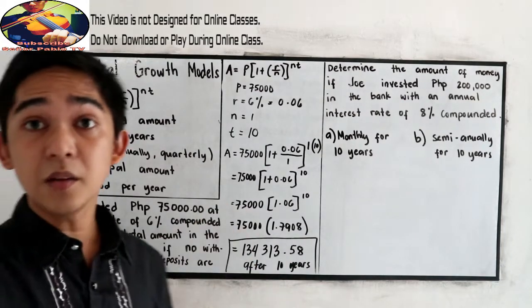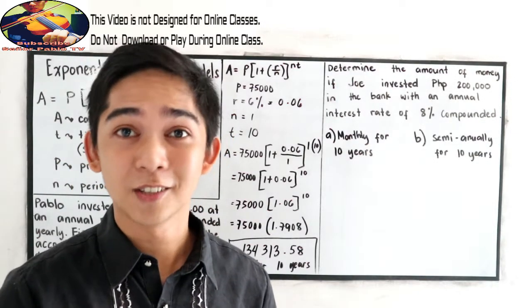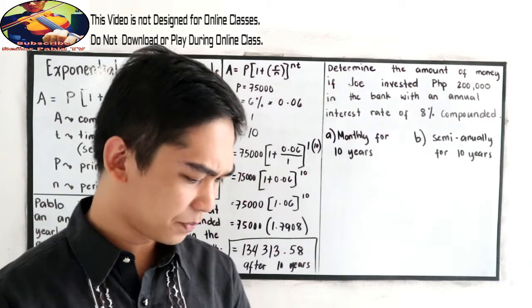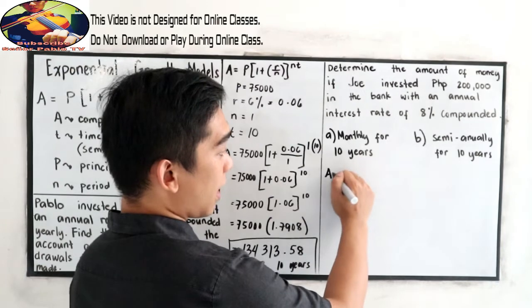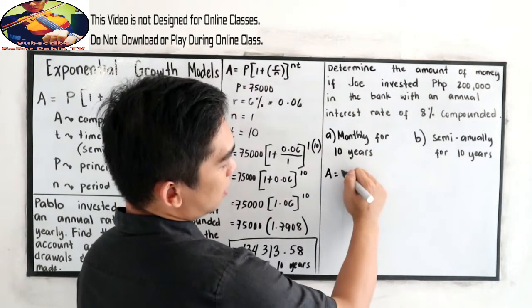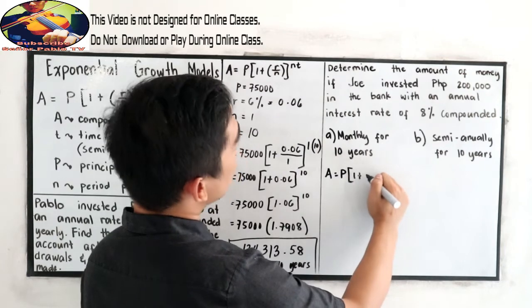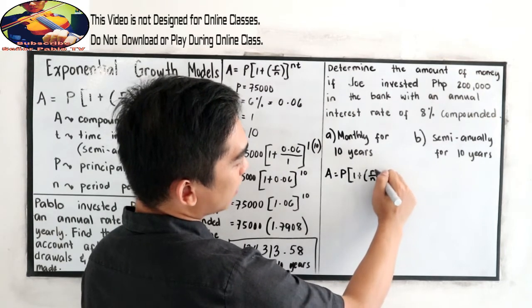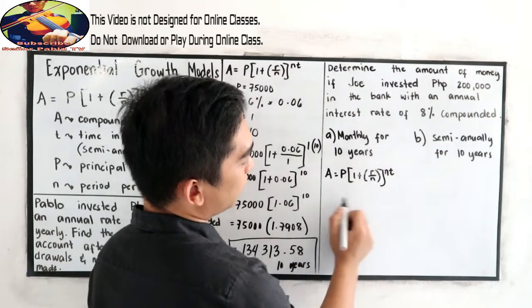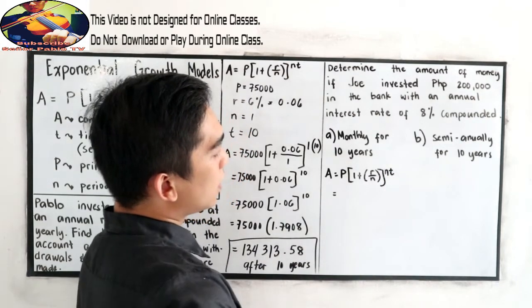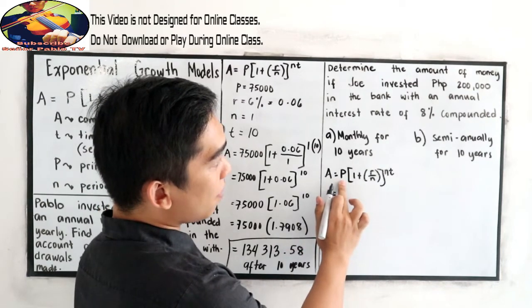If you want to try A and B, you can pause the video. And after answering, resume it and we'll check your answers. Our formula is A is equal to P, 1 plus R over N, raised to N times T.